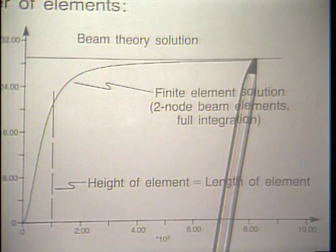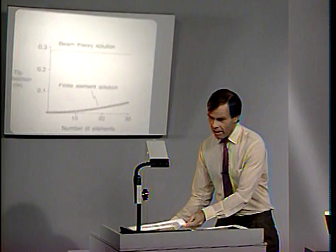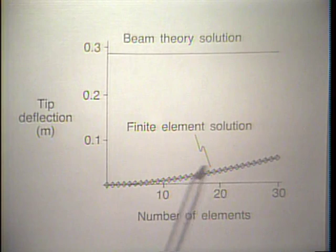We used two-point Gauss integration in the r direction, giving us the exact K matrix corresponding to the interpolation embedded in the element. In this regime, the solution really becomes better very slowly as the number of elements is increased — it doesn't increase in accuracy much at all as we go from 10, 20, to 30 elements.